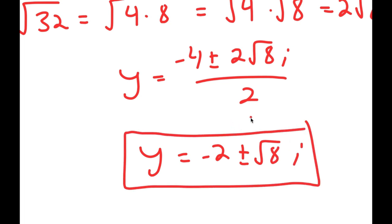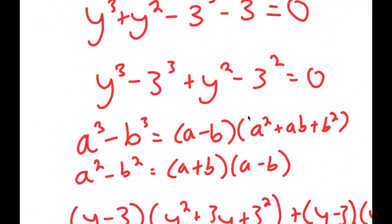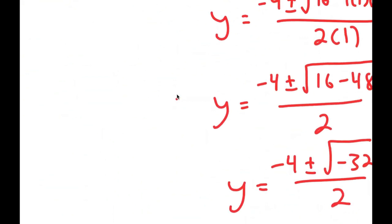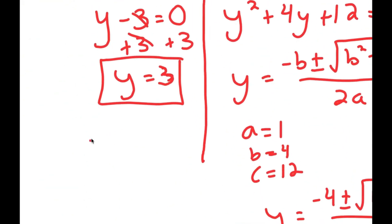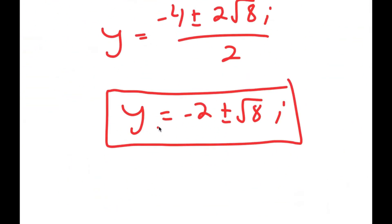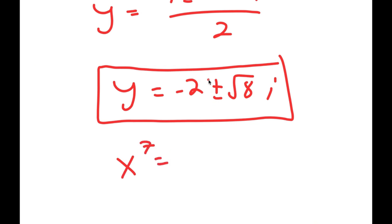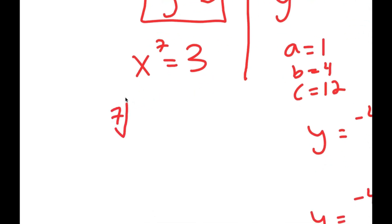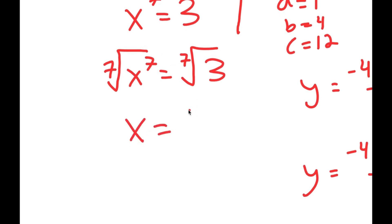However, we're not done yet, because remember we let x to the power of 7 equal y. So if x to the power of 7 equals y, then x to the power of 7 equals 3, and also x to the power of 7 equals the imaginary solutions. However, you can't take the power of a number and make it equal to an imaginary number, so we cannot use those two values of y. The only value we can use is y equals 3. So if x to the power of 7 equals 3, I take the 7th root on both sides: the 7th root of x to the power of 7 equals the 7th root of 3, giving x equals the 7th root of 3.